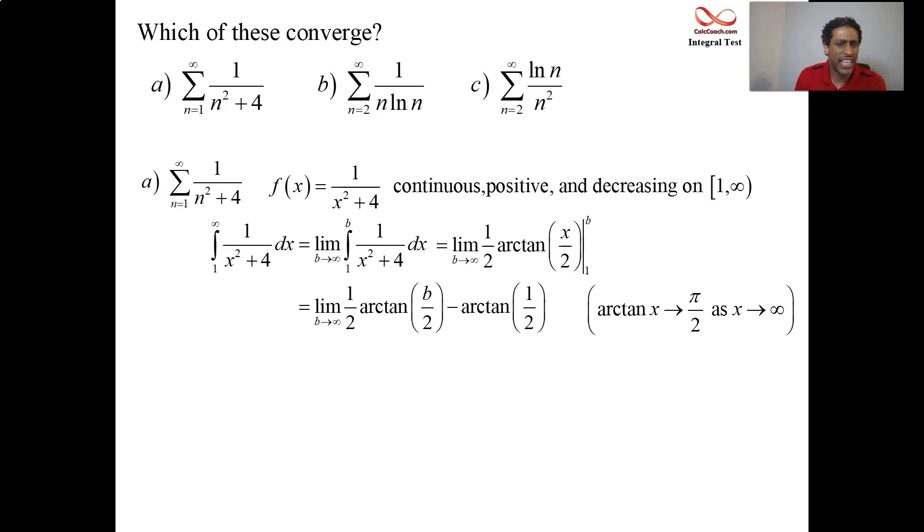The arctan of a half, that's not one of our unit circle angles. Not like arcsine of a half or arccosine of a half. And so just leave it. It doesn't matter. The point is that when it could have been off to infinity, when it could have been divergent, it wasn't. The value of the integral doesn't matter. It's the fact that it converges to some finite number that matters to us. The size of that finite number doesn't matter.